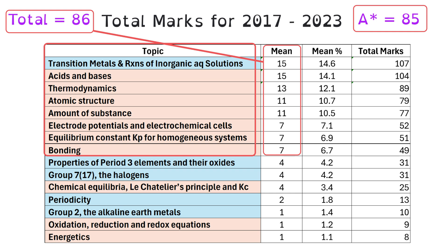Of course, this is based on averages, and there's no guarantee that that's how Paper 1 will work for 2024.